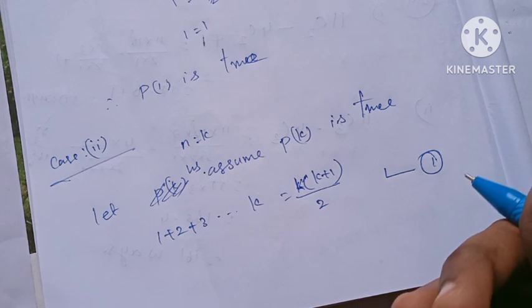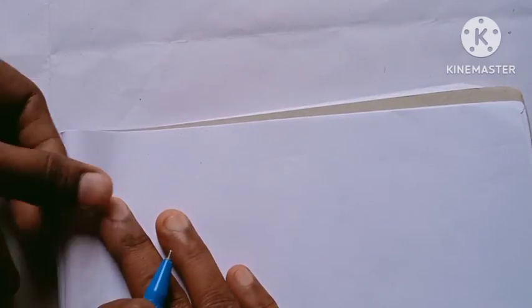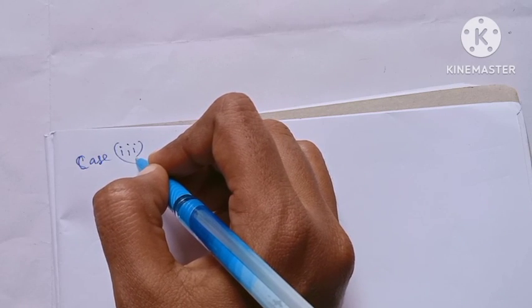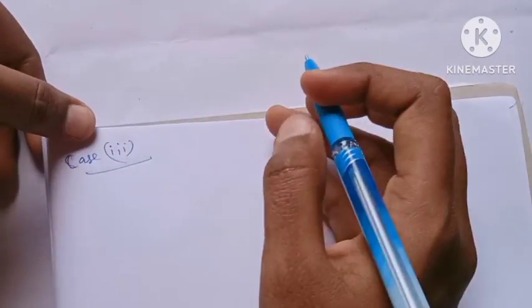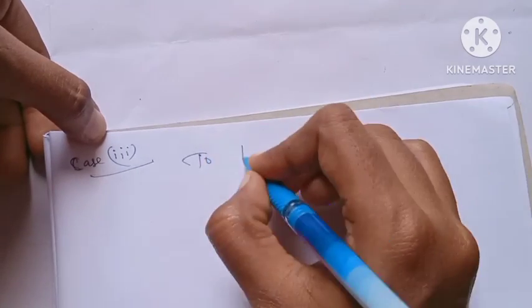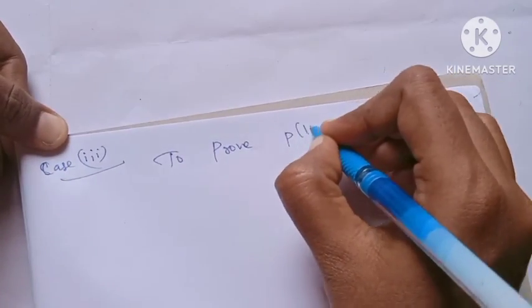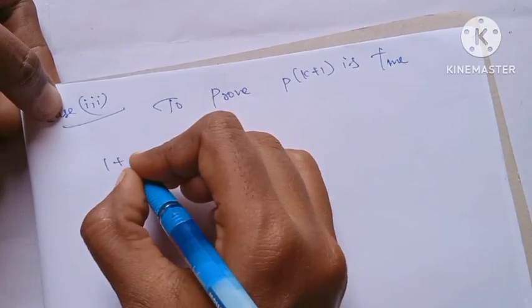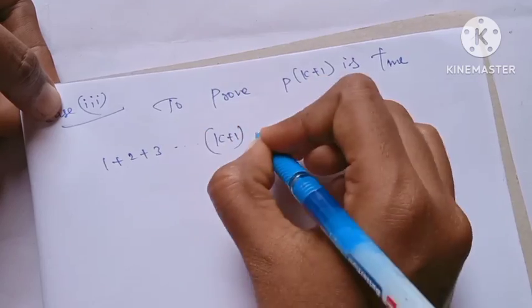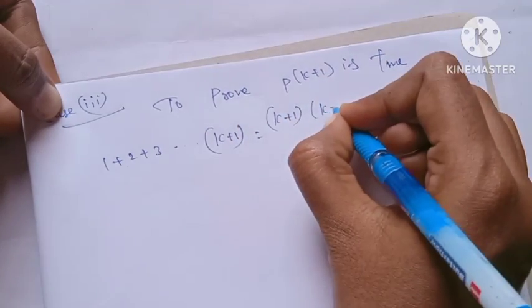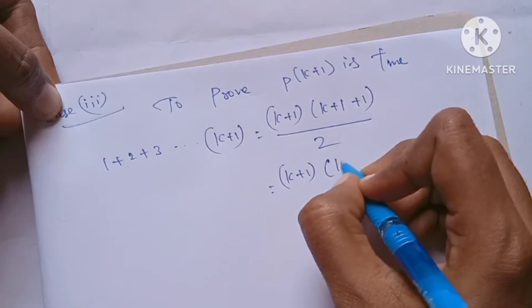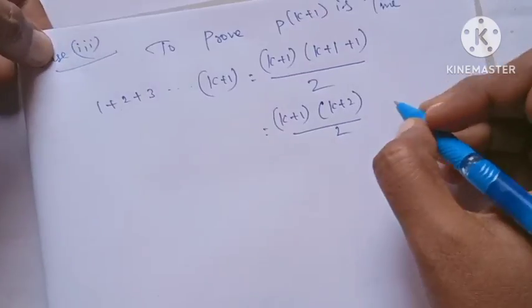Case 3, Step 3: what we need to prove is that P(k+1) is true. We need to show LHS equals RHS, that is: 1 plus 2 plus 3 up to (k+1) equals (k+1)(k+2)/2, where n is replaced by k+1 in the formula n(n+1)/2. This is Equation 2.